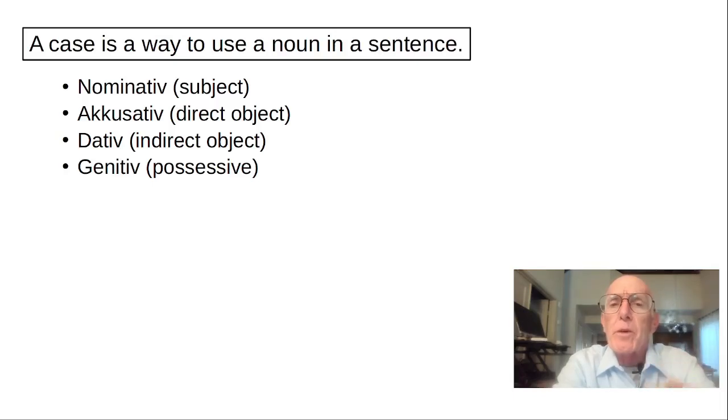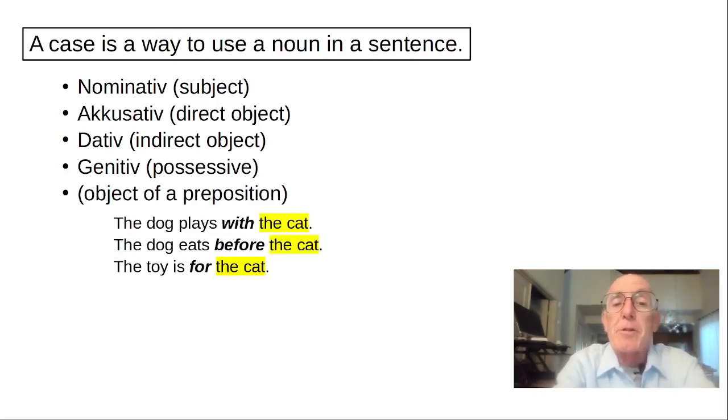But there's one more way that we can use nouns in an English sentence, and that's as the object of a preposition. In these three sentences, the prepositions are with, before, and for.